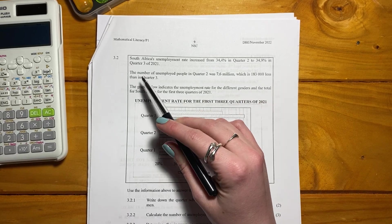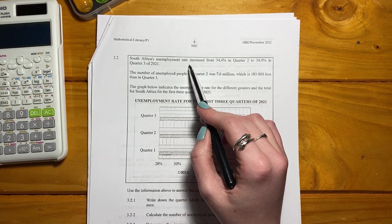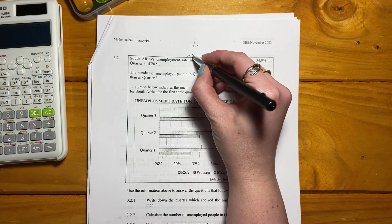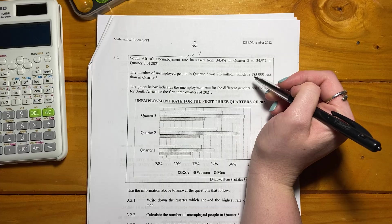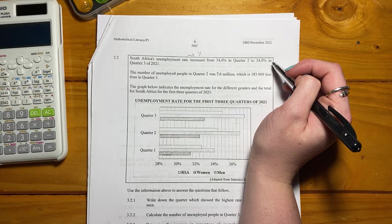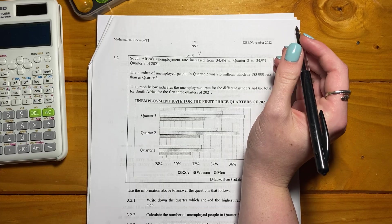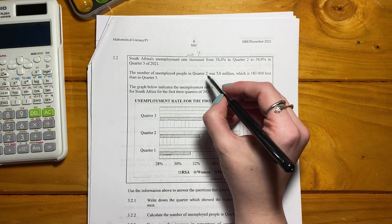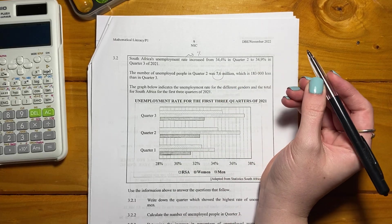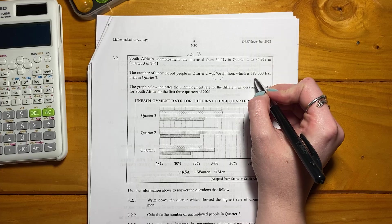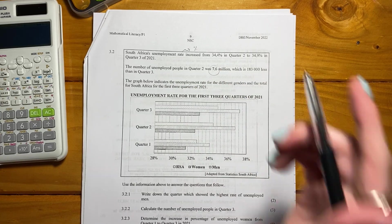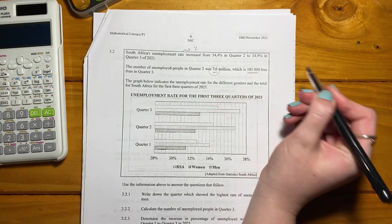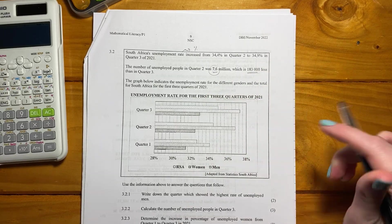Let's look at question 3.2. It says South Africa's unemployment rate - rate is always about percentages - increased from 34.4% in quarter 2 to 34.9% in quarter 3 of 2021. The number of unemployed people in quarter 2 was 7.6 million, which is 183,000 less than in quarter 3. So basically, we know we're probably going to use these numbers, just bear them in mind, but let's keep reading.